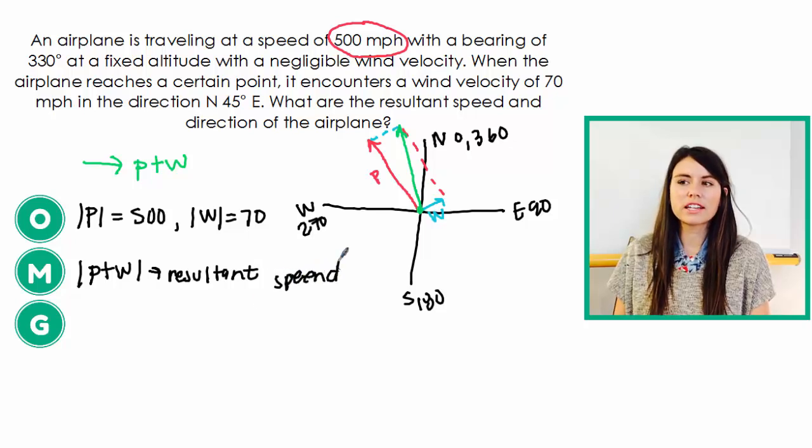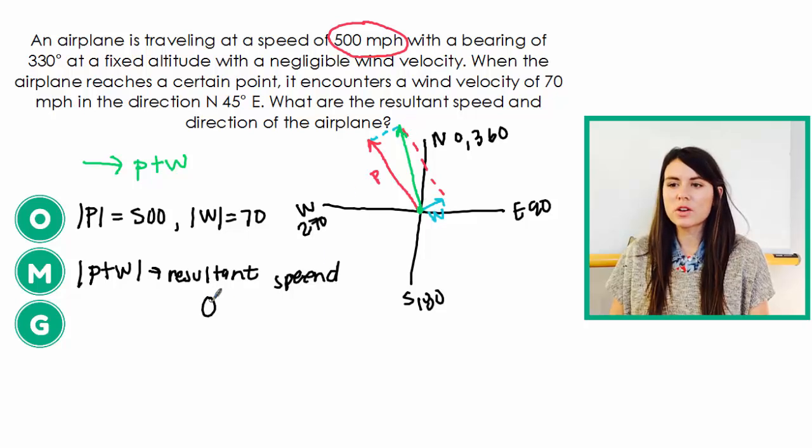And then the other thing I need to find is the direction that it's traveling. So it looks like it's somewhere in between 270 and 360. About right here. So we need to find what theta of our P plus W is.